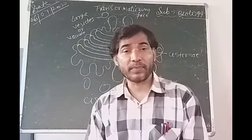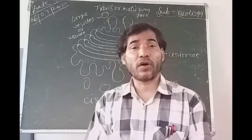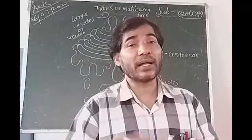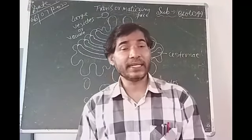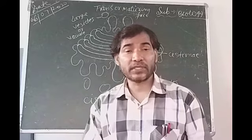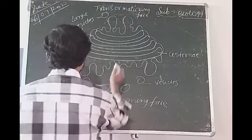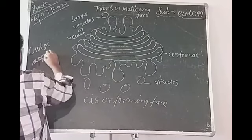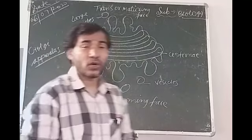To summarize the functions: Golgi apparatus acts as the main secretory cell organelle; it helps in storage, transformation, and packaging of substances synthesized by the smooth endoplasmic reticulum or other organelles; it helps in formation of lysosome and peroxisome; it helps in formation of cell plate in plant cell during cell division; and sometimes helps in formation of complex sugar from simple sugar. This Golgi apparatus is also known as Golgi complex or Golgi body.